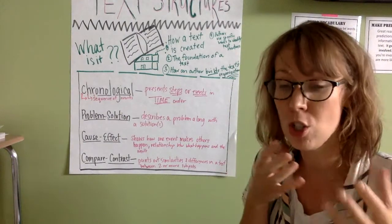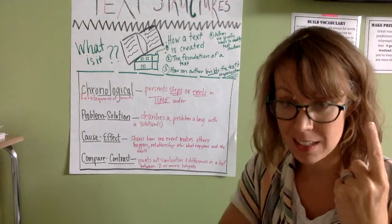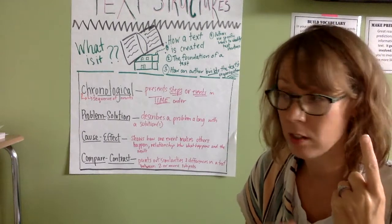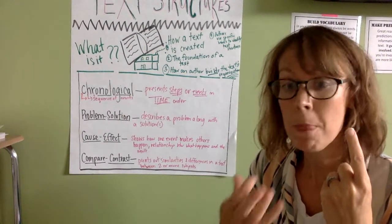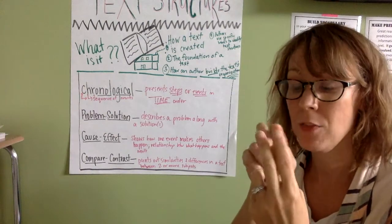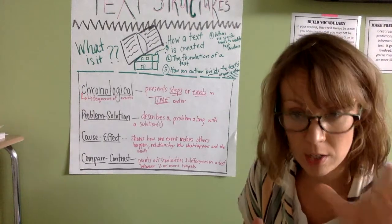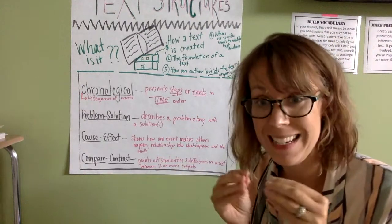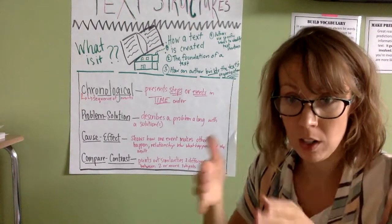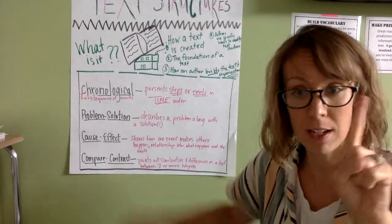So there's actually two within one. There's chronological order, time, dates. Most of your history books, your social studies articles, they do a lot of chronological text structure. But if it's a recipe or a sequence of events that uses first, next, last words inside of the order of the text, then it's going to be sequence of events. So that's one.